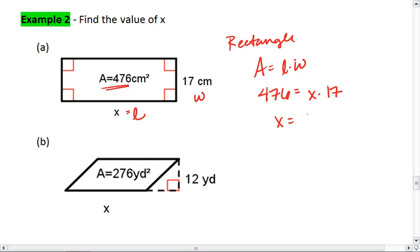This means x equals 476 divided by 17, which, if we calculate that out, we get 28 centimeters.